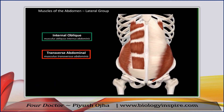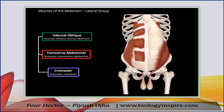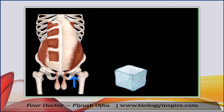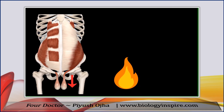The internal oblique and the transverse abdominal muscles are special in that they both fuse at the very bottom of the abdomen to form a muscle called the cremaster muscle, specifically in males. This muscle surrounds the spermatic cord and the scrotum, and is the main reason why the testes are able to regulate temperature. When it's cold outside, the cremaster muscle contracts and pulls the testes towards the body to maintain temperature. When it's warm outside, they relax since they don't need the body's heat.